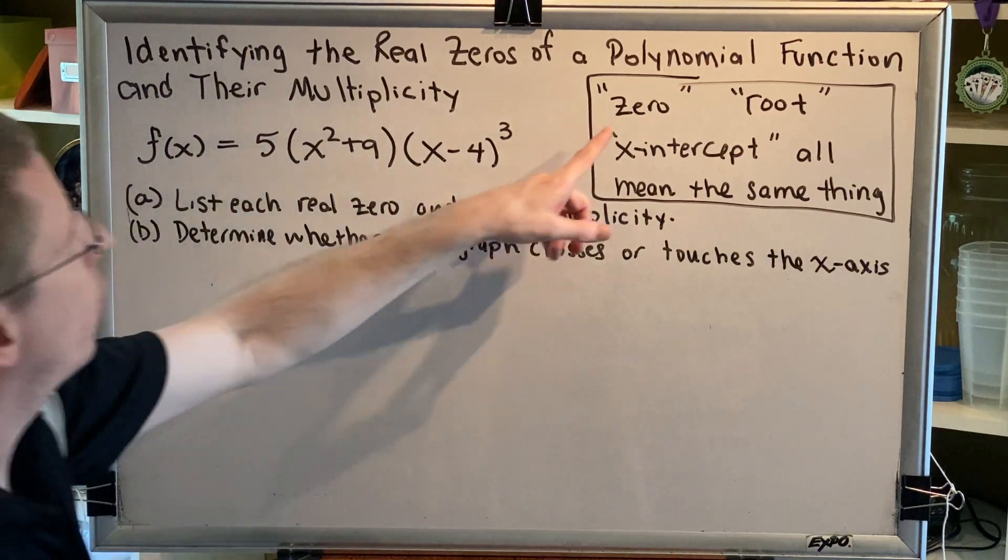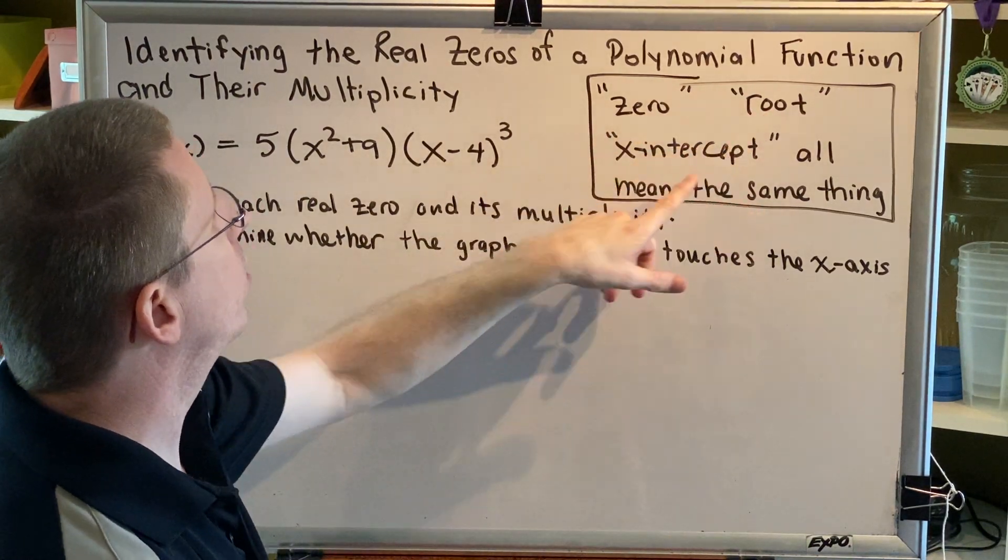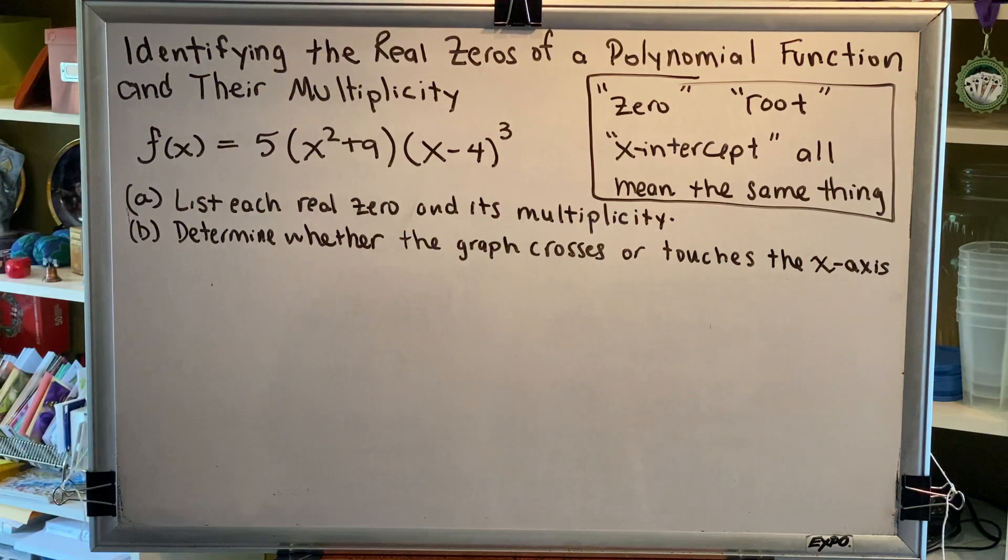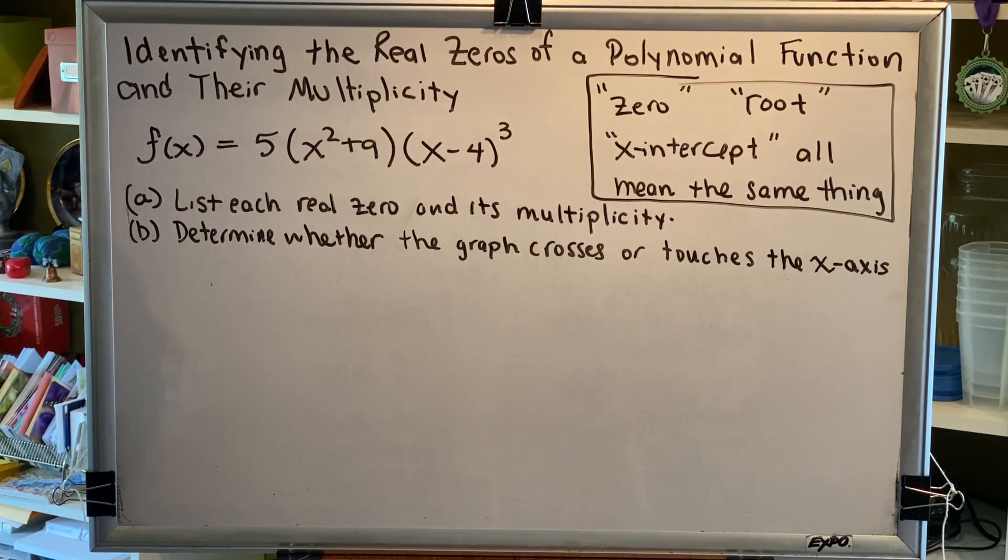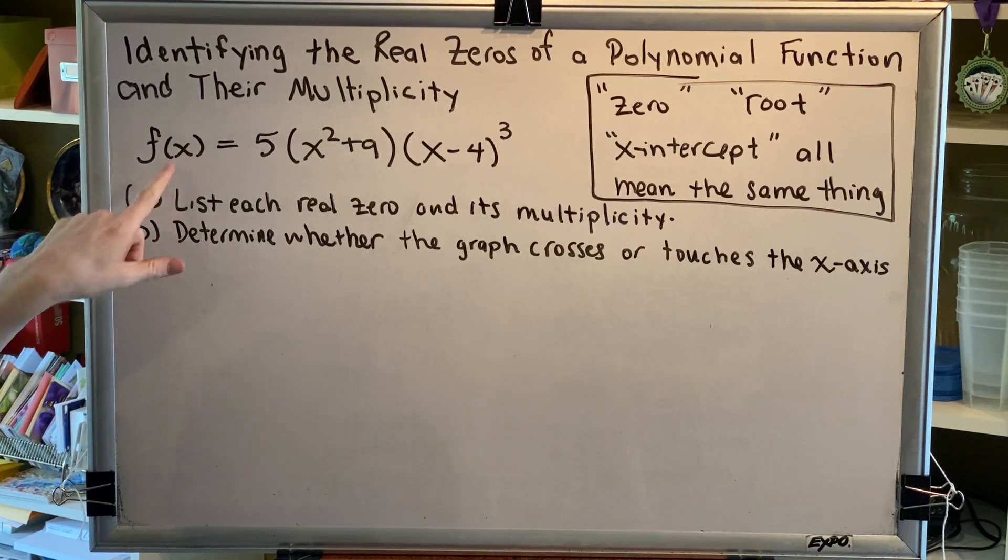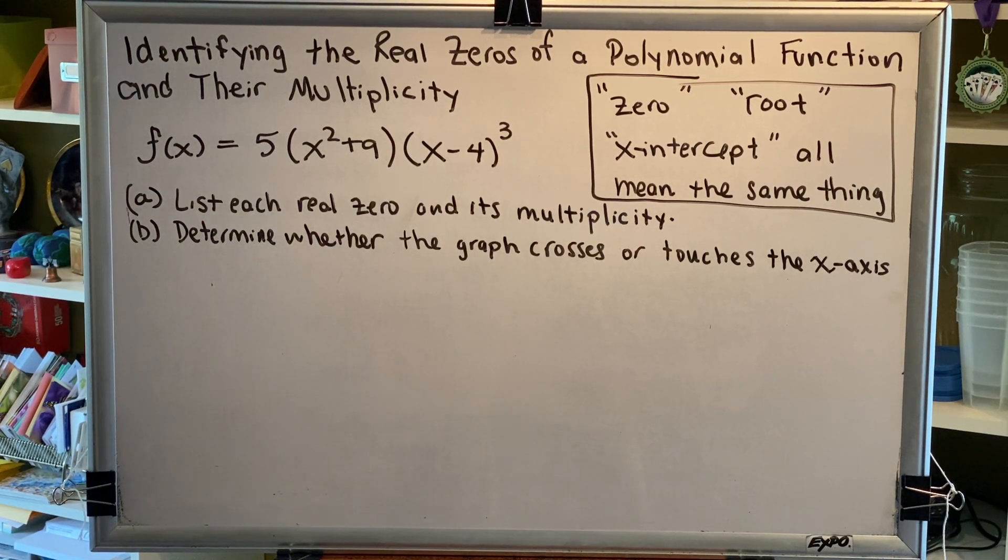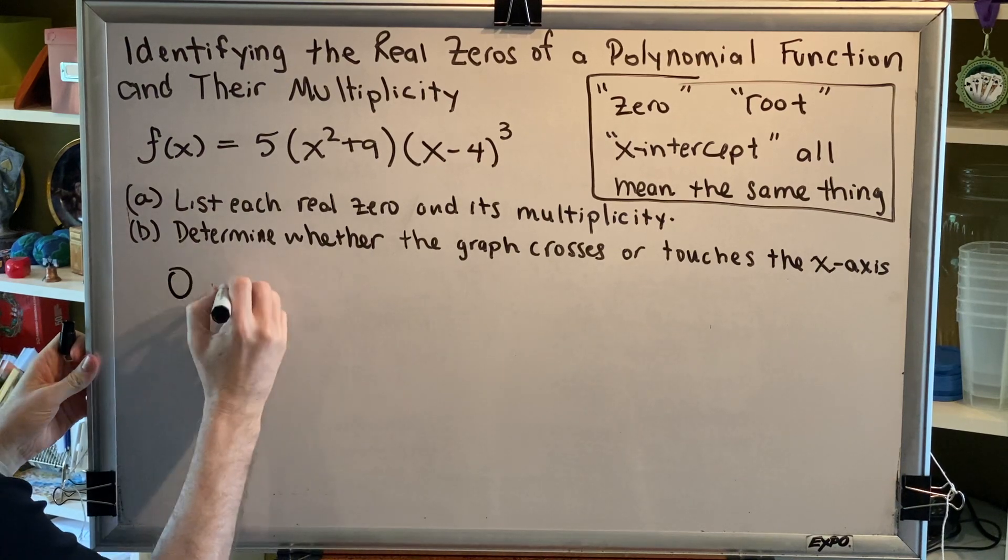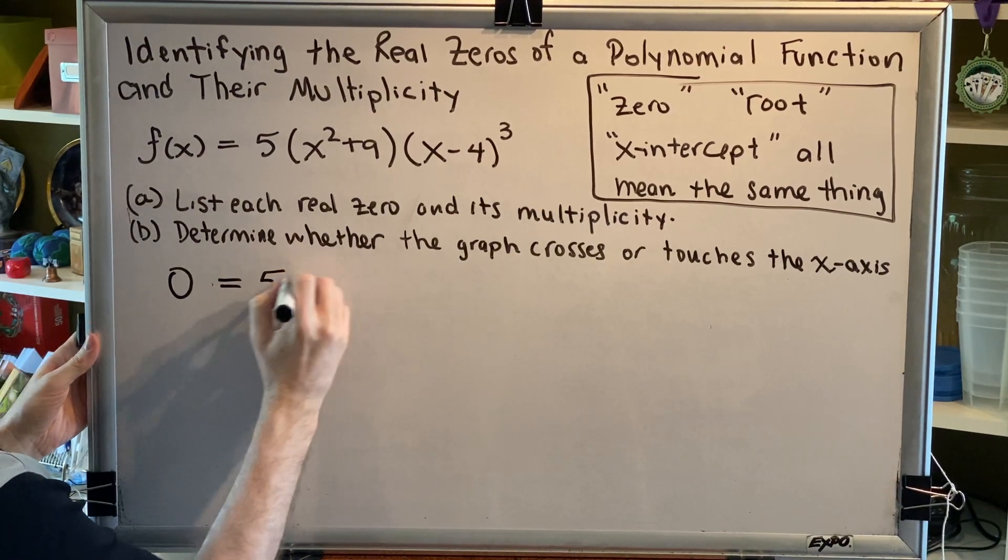As a brief reminder, the words zero, root, and x-intercept all mean the same thing. We know that an x-intercept has a y of zero, and f of x is the same as y. So if we want to find zeros, we replace f of x with zero and solve.